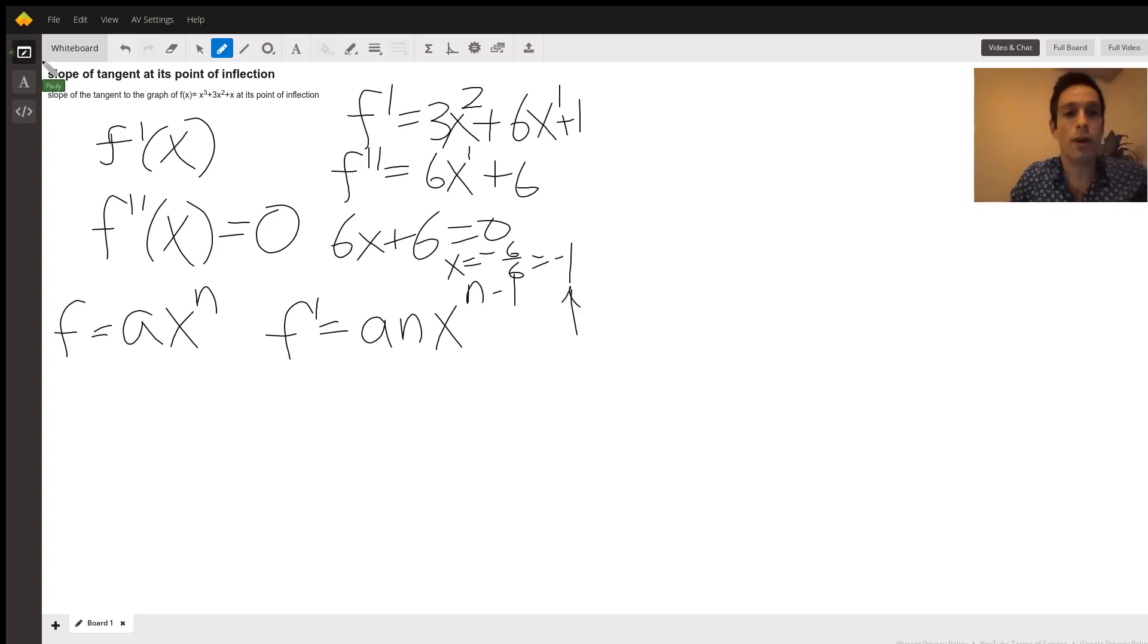Okay, and then at that location is the point of inflection. So if the first derivative gives the slope, is the rate of change of the slope of the tangent, and the second derivative when it equals zero gives us the point of inflection, the location of the point of inflection.